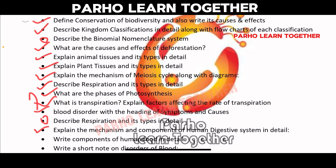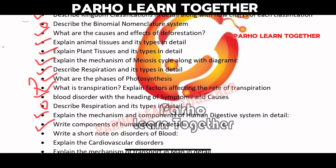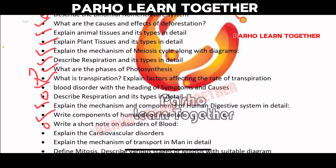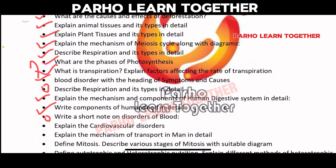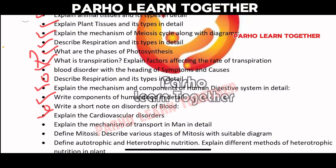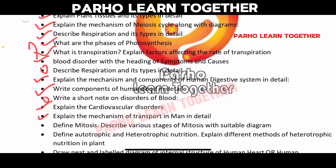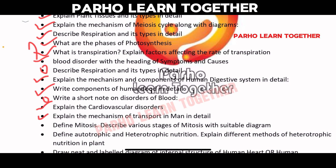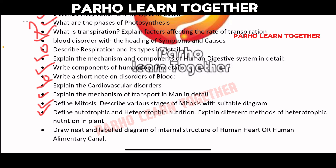Write about blood disorders with headings of symptoms and causes. Describe respiration. Explain the mechanism and components of the human digestive system in detail. Explain the components of human food in detail. Write a short note on disorders of blood. Explain cardiovascular disorders. Explain the mechanism of transport in man. Describe the labeled diagram of the internal structure of the human heart and the human alimentary canal — this is most important.